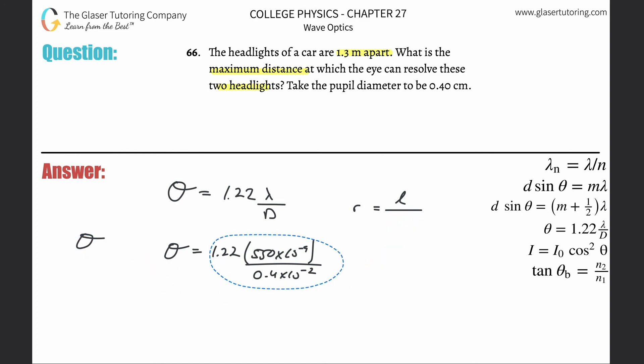I'm going to plug this thing in. My L value, the distance between the headlights they told me was 1.3 meters, so there's now your formula with everything needing to be plugged in. Obviously this is a big division sign right here, so it's 1.3 divided by that whole denominator.